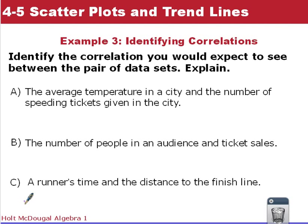Now we want to identify the correlation we would expect to see between pairs of data sets and explain why. Our first one: the average temperature in a city and the number of speeding tickets given in the city. The number of speeding tickets has nothing to do with the temperature, so we'd expect to see no correlation between these data sets.